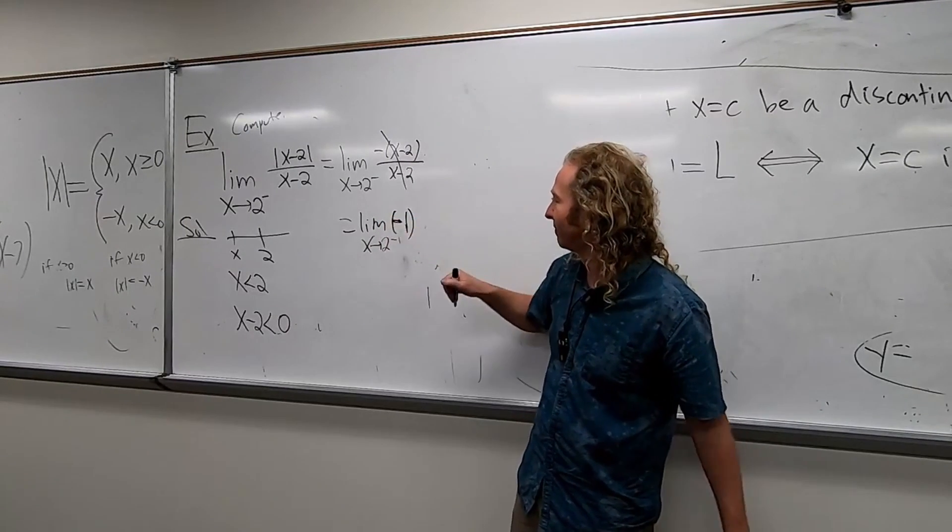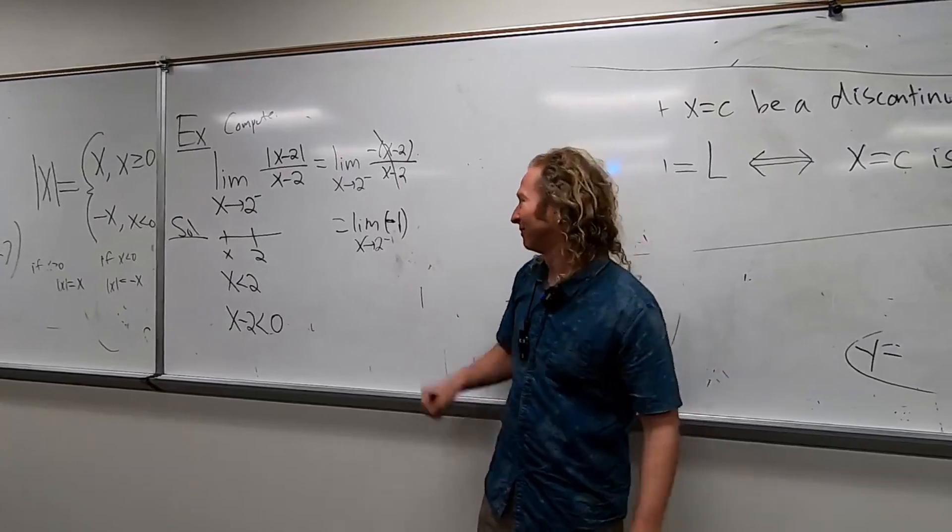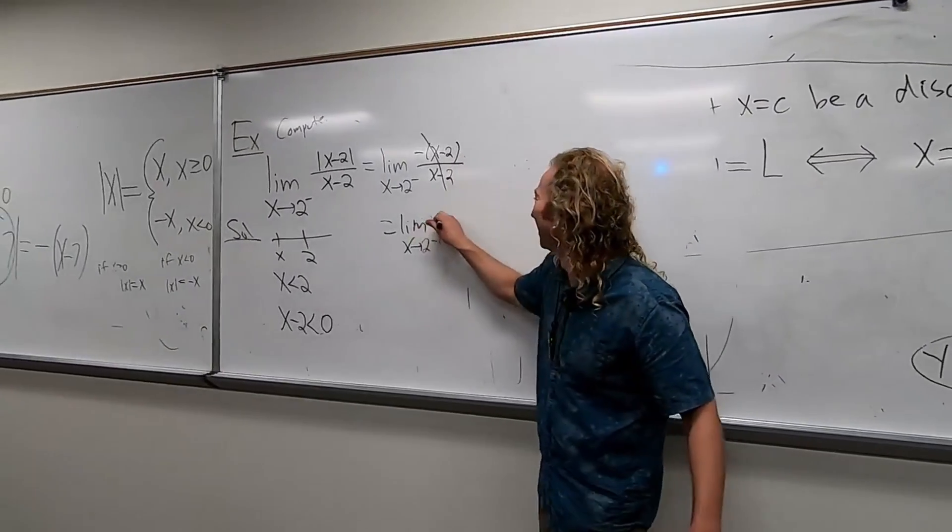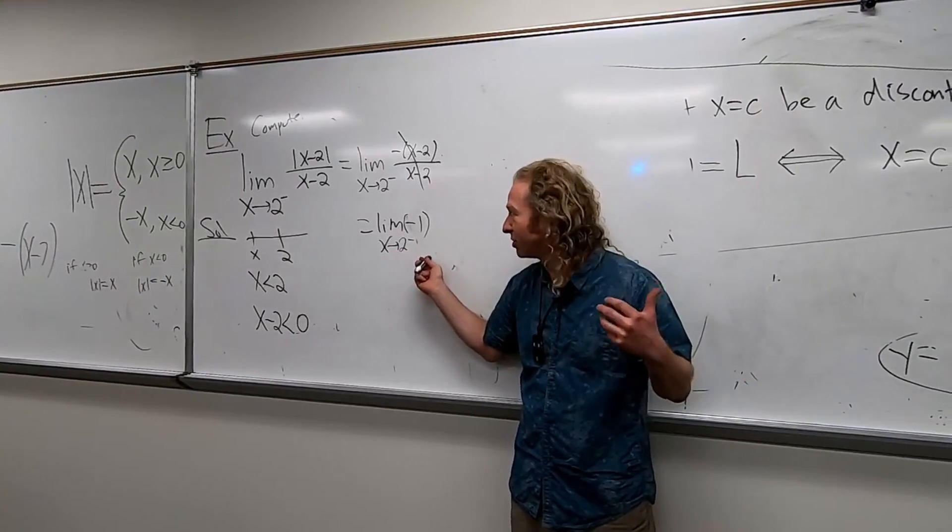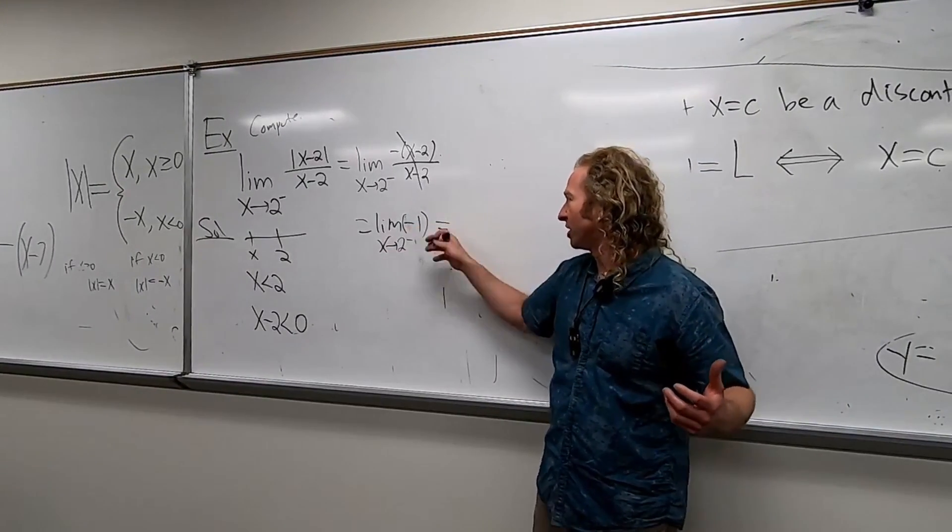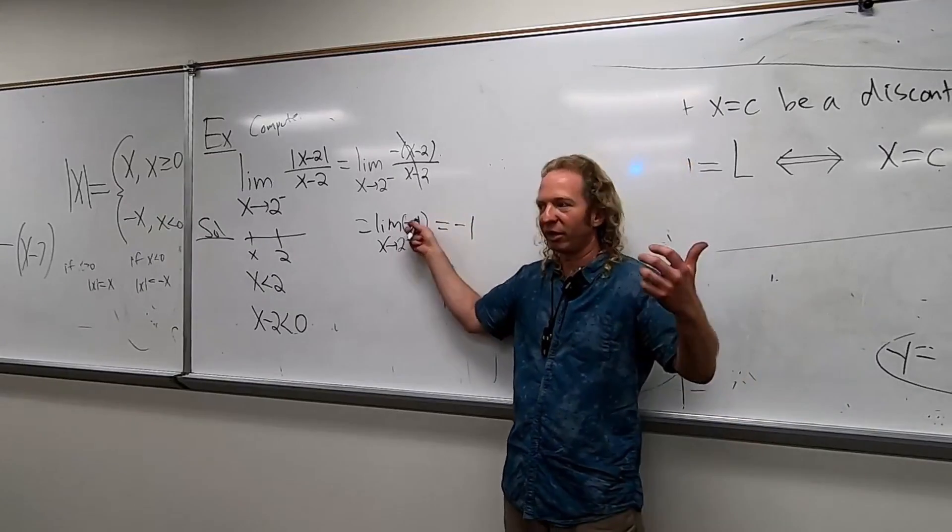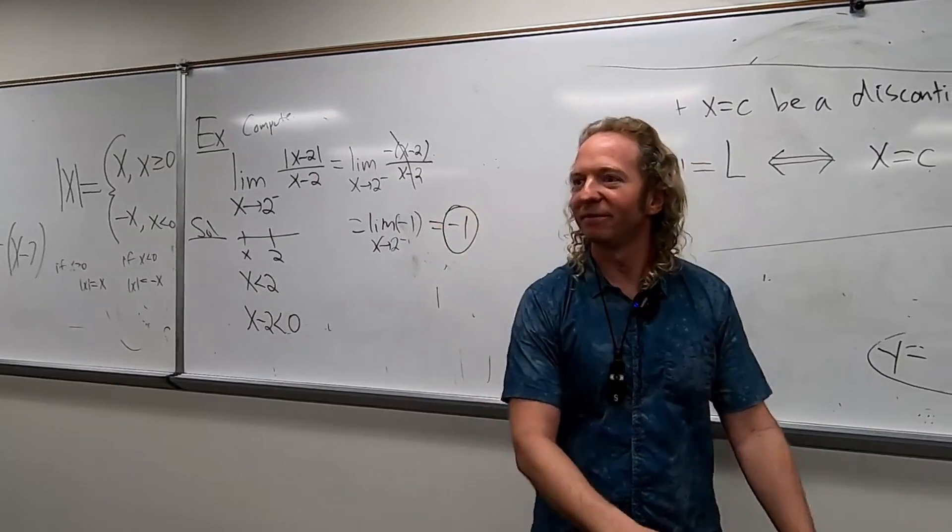That's really ugly. It's too late. It's better. And then you're taking the limit as x approaches 2 from the left. So you just get negative 1, right? Because you plug in. There's nothing to plug in there. And that's the answer. That's the answer.